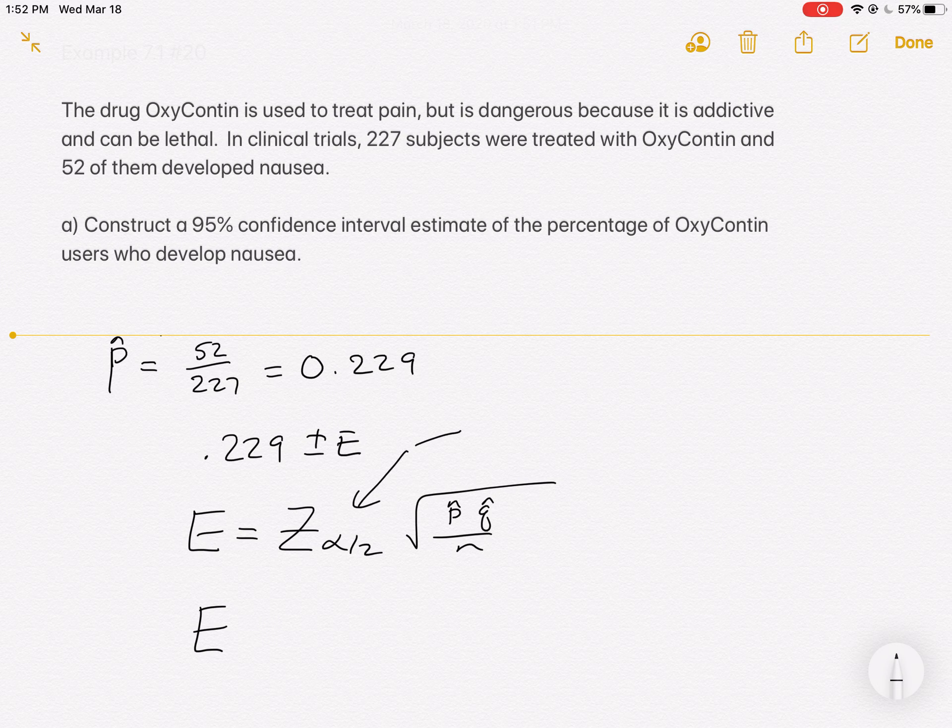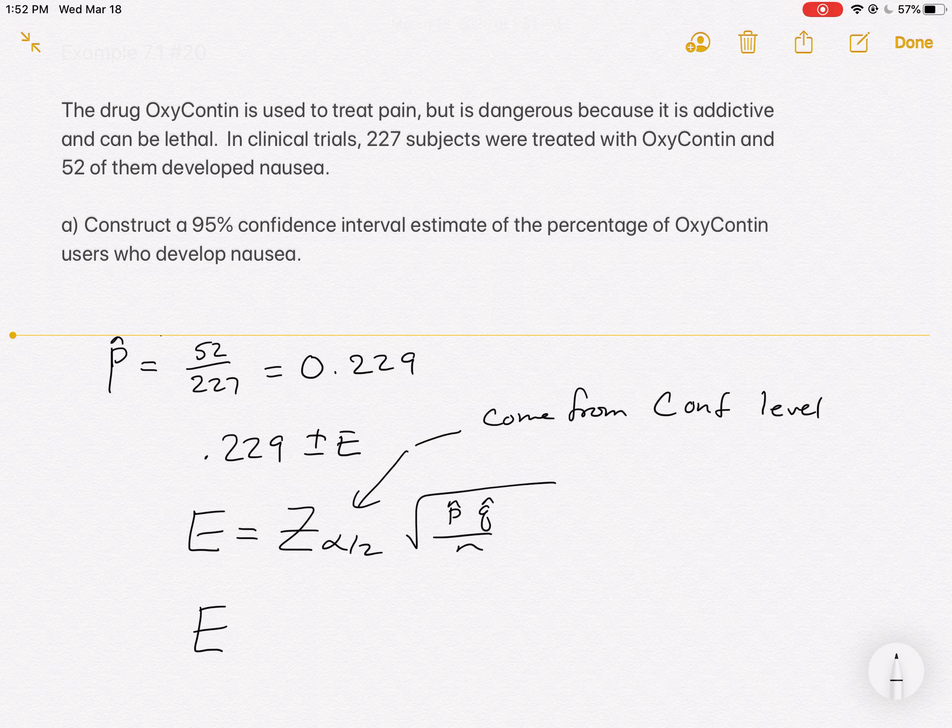Hopefully by now you realize that's going to come from the confidence level. Now, the confidence level will be stated. I think we have some homework problems where they don't state it. Whenever they don't state it, they use the most common one as 95%.